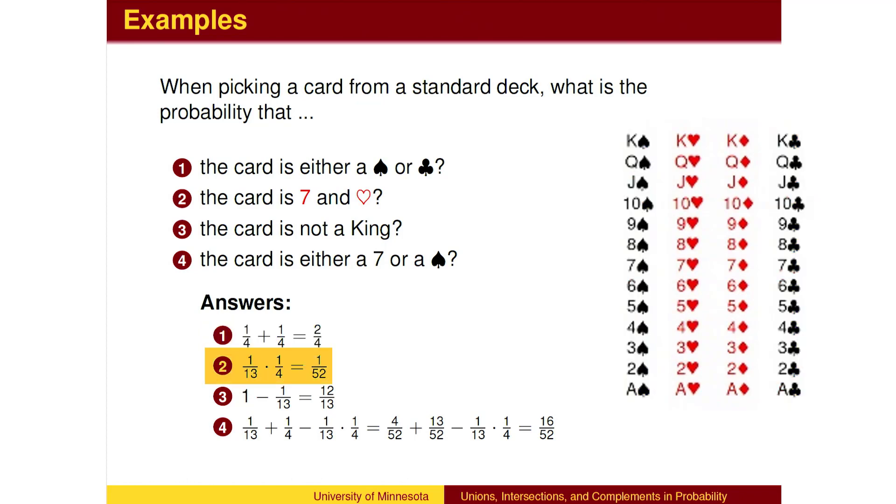There are 13 possible values, of which 7 is one of them. There are 4 possible suits, of which hearts is one of them. The word AND means multiply, so we get the probability 1 out of 52. This makes sense because the 7 of hearts is one of the 52 cards in a deck.